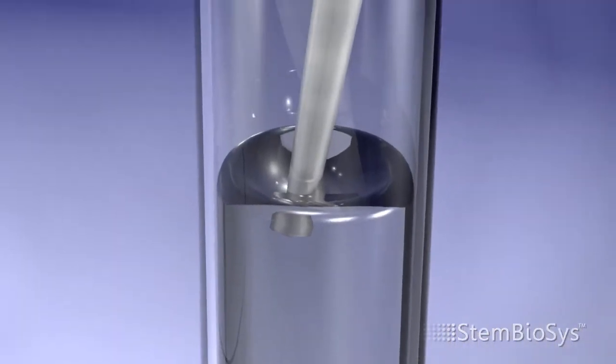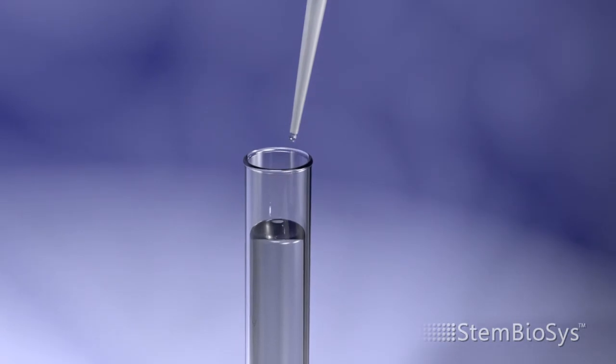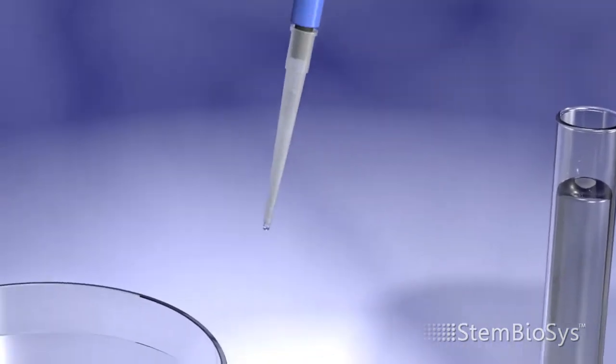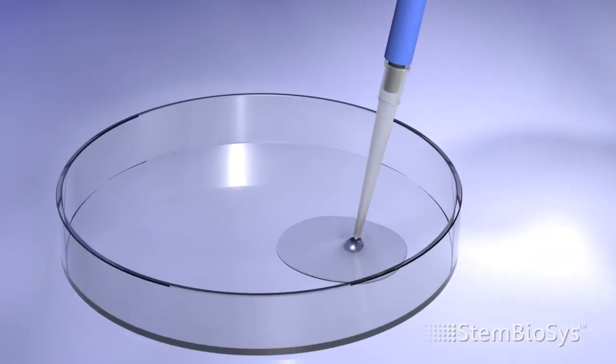We begin with a bank of commercially available bone marrow stromal cells from healthy young adults. These cells are then added to a standard cell culture dish.